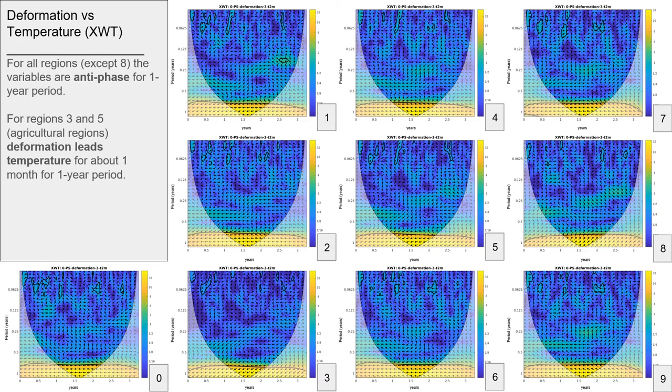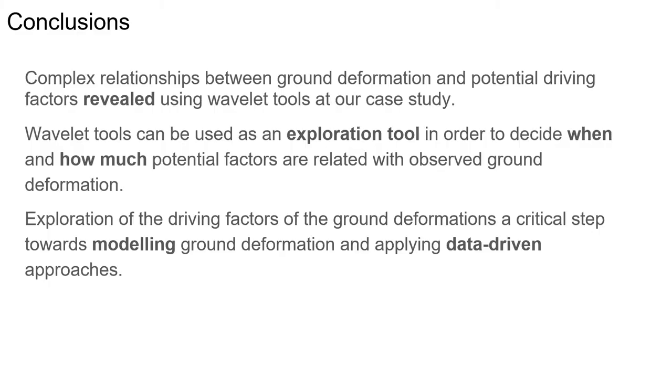Finally, deformation and temperature appear to have an anti-phase relationship in most regions. For agricultural regions 3 and 5, a time lag of about 1 month was identified, possibly related to the crop calendar.